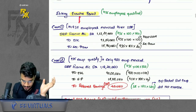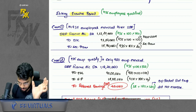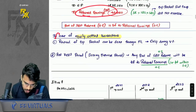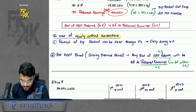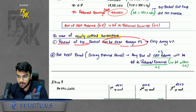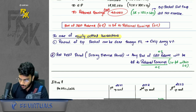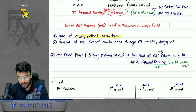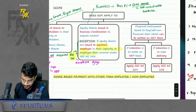If few employees do not exercise the option during the exercise period, transfer the balance SBP reserve to retained earnings. In equity settled, if reversal happens during the vesting period it goes through P&L; if post vesting period, the SBP reserve balance transfers to retained earnings.